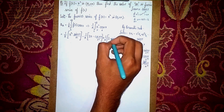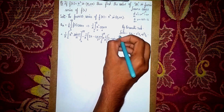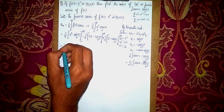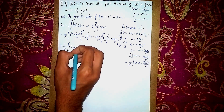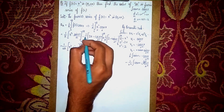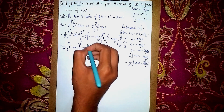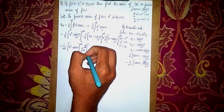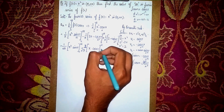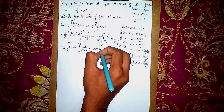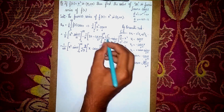Taking constants outside: aₙ = (1/nπ)[x²·sin(nx)] from 0 to 2π, plus (2/n²π)[x·cos(nx)] from 0 to 2π, minus (2/n³π)[sin(nx)] from 0 to 2π.